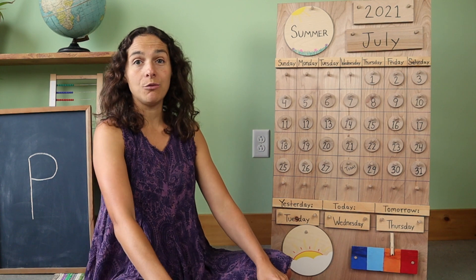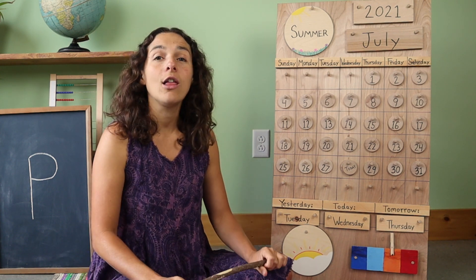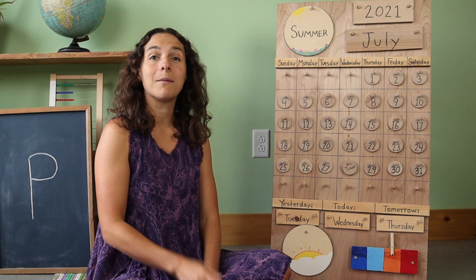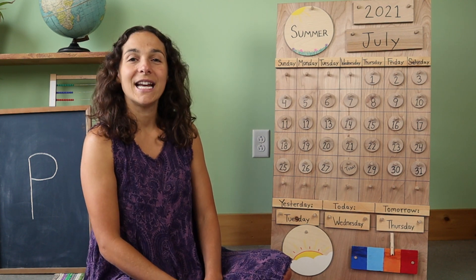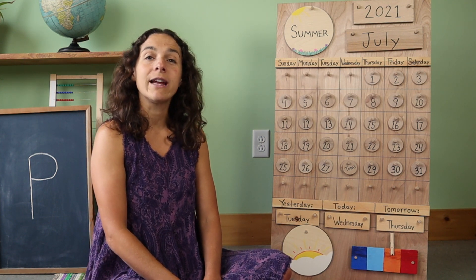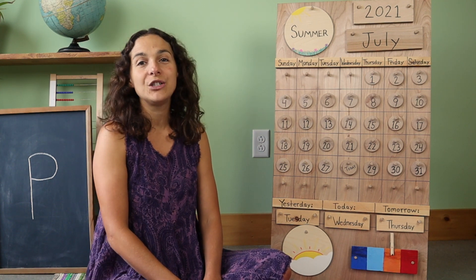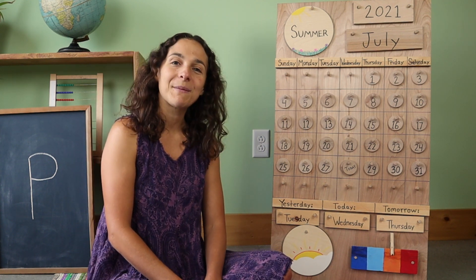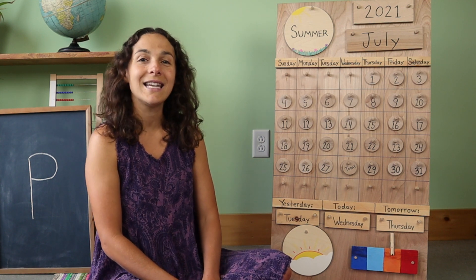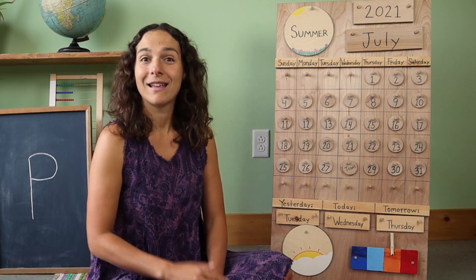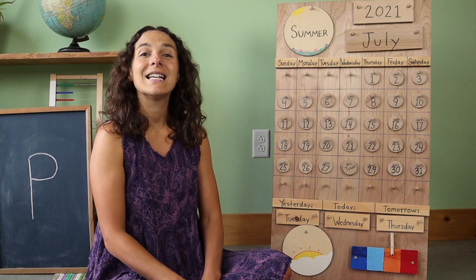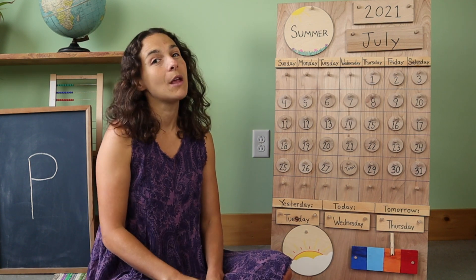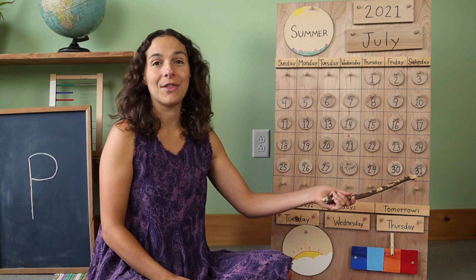Then we will begin a brand new month. I'm going to sing a song all about the 12 months in a year — listen carefully to see if you can hear what month comes after July. January, February, March and April, May and June, July and August, September, October, November, December — 12 months in a year. Did you hear that? The month that comes after July is August. The first day of August will be in four days, but we still have three more days left in the month of July.